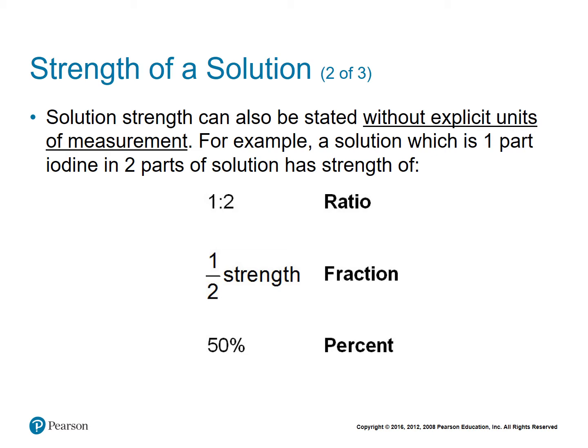For example, your strength might be one to two, which basically says you have one part drug for every two-part solution. You could write that as one-half strength, or write that same thing as 50% strength.